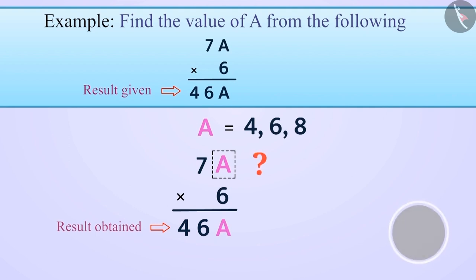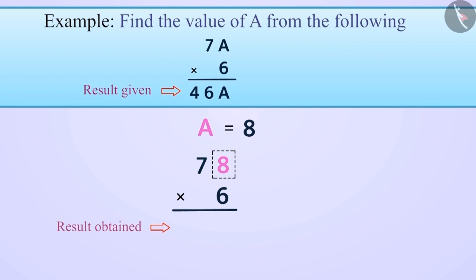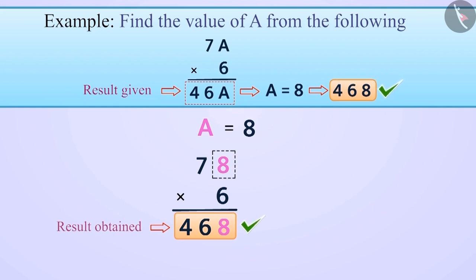After substituting A as 4 or 6, the results obtained in both cases do not match the given result. But when we substitute A as 8, then 78 times 6 equals 468. Similarly, substituting 8 in the place of A in the result also gives 468. In both cases the result is the same, so we can say that the value of A is 8.